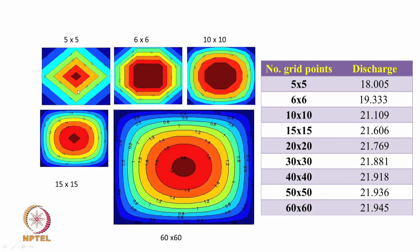What we are seeing here are the velocity contours for the rectangular flow case with 5 by 5 cells, 6 by 6, 10 by 10, 15 by 15, and 60 cells in both x and y direction, all done using the same program. So you need to be systematic in understanding how to do it and how to code it, but it is not difficult to write the computer program. If you can write that, then you can easily run it for any number of divisions and get a solution.